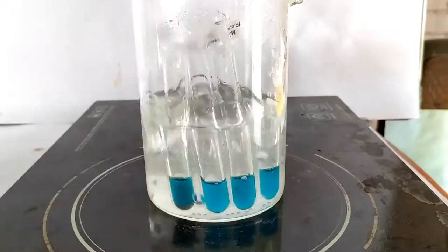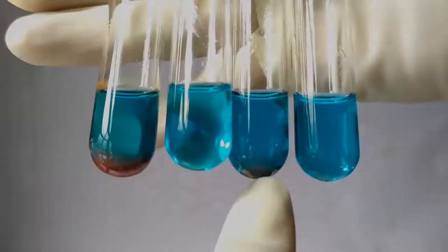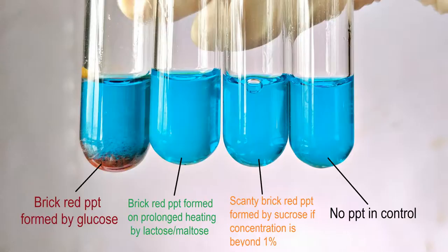We can see that the tube containing the reducing monosaccharides forms a brick red precipitate during the 2 minutes of boiling. The tube containing the non-reducing disaccharide also forms scanty brick red precipitate on prolonged standing. And if the tube containing the reducing disaccharide lactose or maltose is boiled for an additional 10 minutes or so, it also eventually forms a brick red precipitate, as can be seen here. The rest of the tubes do not form any colored precipitates. This demonstrates the use of Barfoed's reagent to detect monosaccharides in a sample, and also its ability to distinguish monosaccharides from reducing disaccharides based on the difference in time taken for the precipitate to develop.